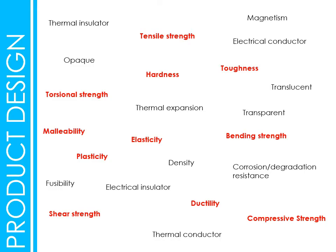Torsional strength — torsion is all about twisting. Like when someone grabs your arm and twists it in two different directions as a kid. So torsional strength is the material's ability to withstand fracturing from twisting.